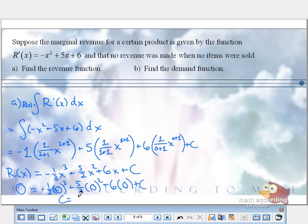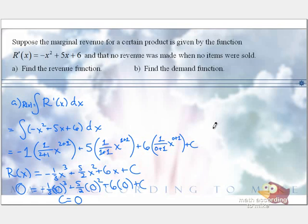So for some of these problems, instead of that c there, our real answer is -⅓x³. I forgot what I was saying. Plus 5/2 x². Plus 6x. That is our revenue function.